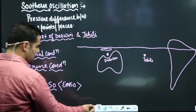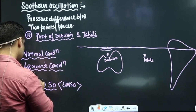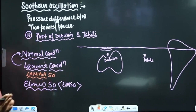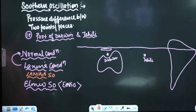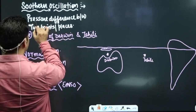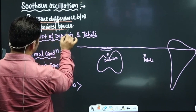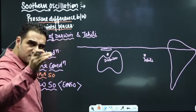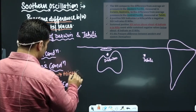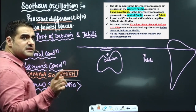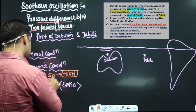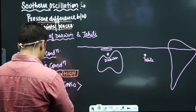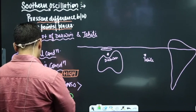I am telling you some terms to understand so that you can retain them while addressing questions or problems. Southern Oscillation is the pressure difference between Darwin and Tahiti. When the pressure difference is higher, we say Southern Oscillation is high — that means La Niña. When Southern Oscillation is low, it means El Niño.